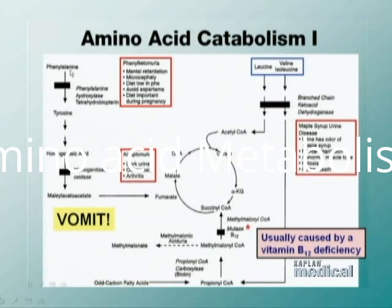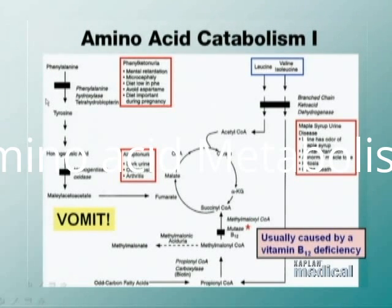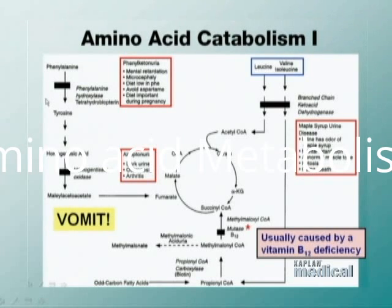Phenylalanine hydroxylase converts phenylalanine to tyrosine by adding a hydroxyl group to the phenyl ring. This is not only a degradation pathway for phenylalanine but also the way tyrosine is synthesized. The required cofactor is tetrahydrobiopterin. You need to know both the enzyme name and cofactor because of the disease phenylketonuria (PKU).